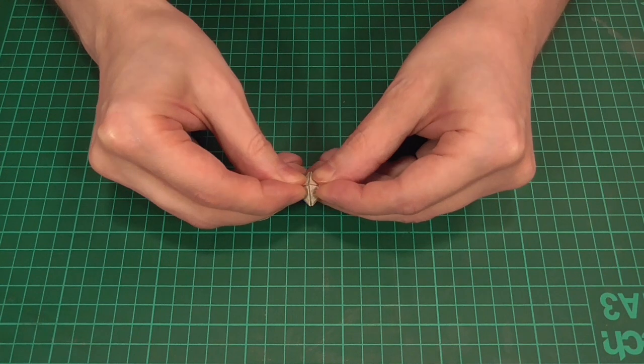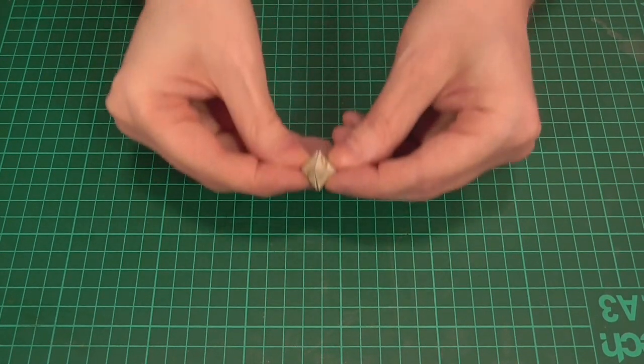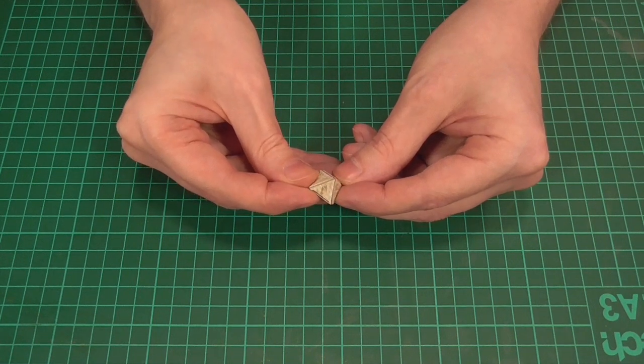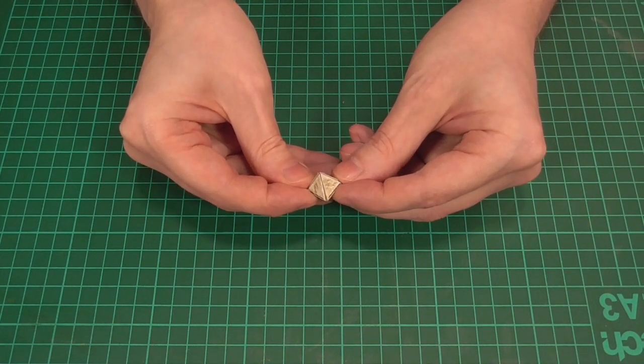So that when we fold the little triangular shapes into a point that's what the inside of those triangles are going to be sticking to. And when that's dry it should hopefully result in a little pyramid shape like the one that you can see here.